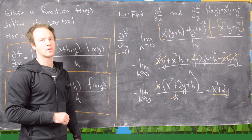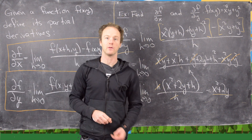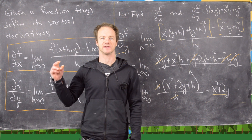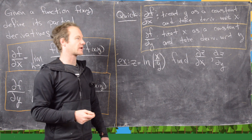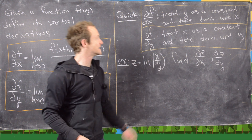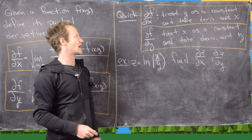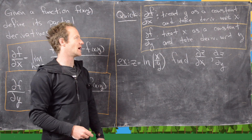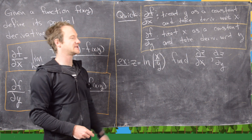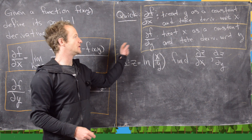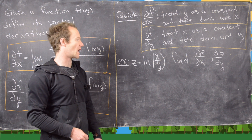And that's actually going to be the quick way to calculate partial derivatives. If we want to calculate ∂f/∂x, we treat y as a constant and take the derivative with respect to x. And if we want the partial of f with respect to y, we treat x as a constant and take the derivative with respect to y.